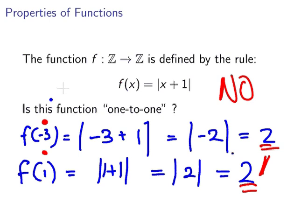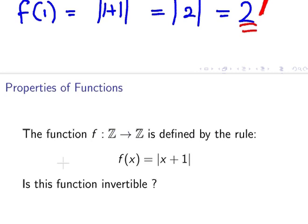It is not one-to-one. It is not onto. So it is the case that it is not invertible. The last question is, is this function invertible? No. Not one-to-one, not onto. And that ends our presentation.